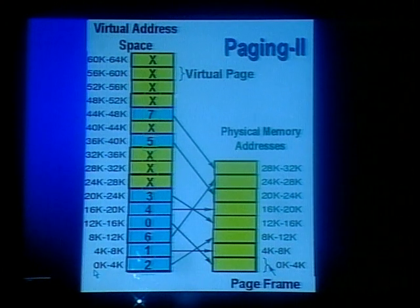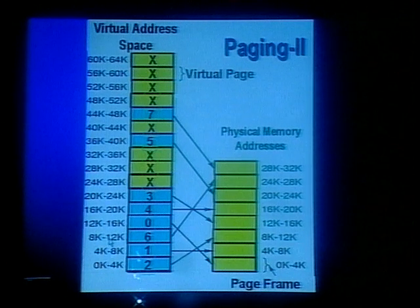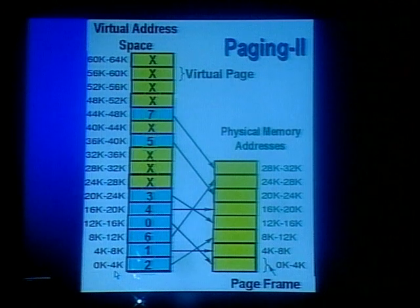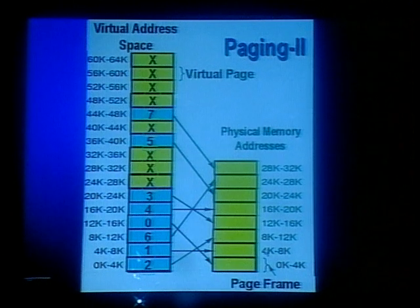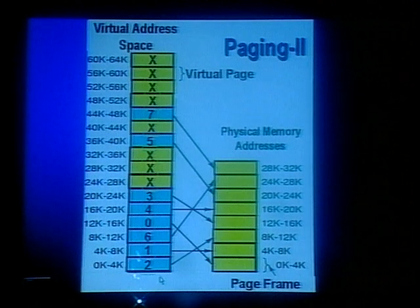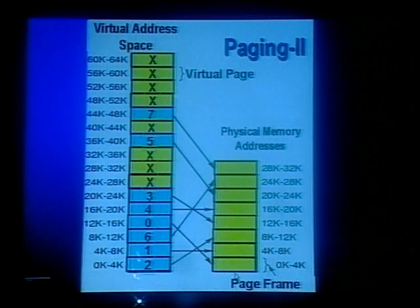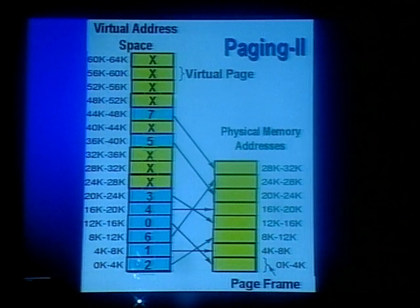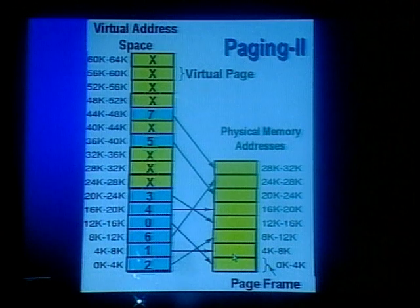We see that the page sizes are 0K to 4K, 4K to 8K, 8K to 12K, 12K to 16K — equal size pages of 4K each. The page frames are similarly 0 to 4K, 4 to 8K, 8 to 12K, 12 to 16K. The virtual pages are exactly the same size as the page frames in physical memory. It is the job of the memory management unit to map a page in the virtual address space to a page frame in the physical memory.